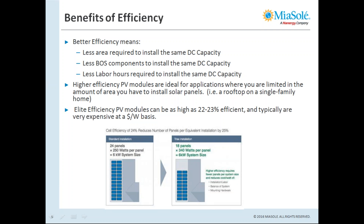Looking at the diagram at the bottom of the presentation, you can see a 24-panel system made up of 250-watt panels equating to a 6-kilowatt system. The home on the right that uses 340-watt modules needs 25% less space to equal the same 6-kilowatt system. That's a clear example of how efficiency can be a benefit. High-efficiency PV modules are usually more expensive at a dollar-per-watt scale, so you have to calculate the trade-off between paying more for the panels versus the balance-of-system and labor savings.